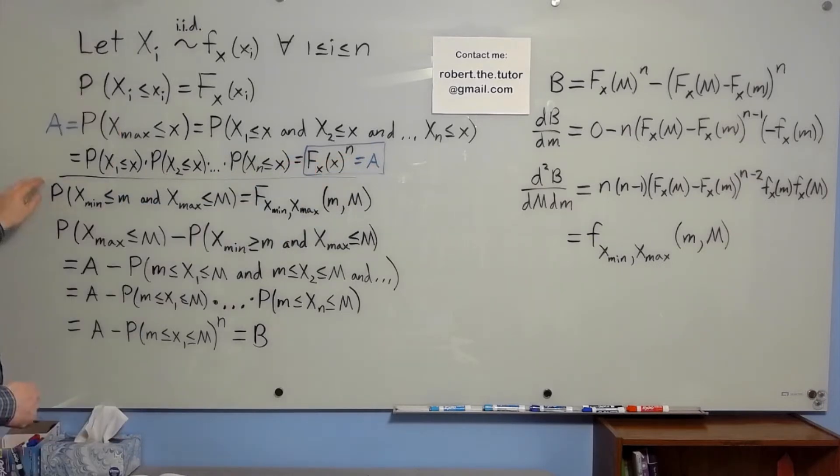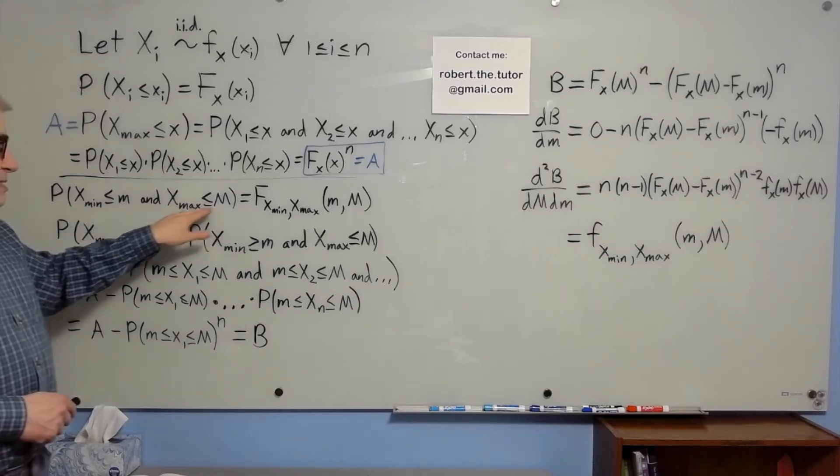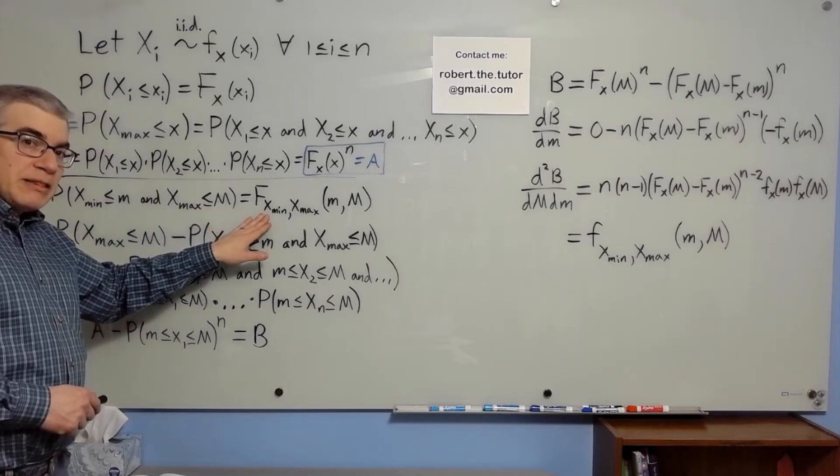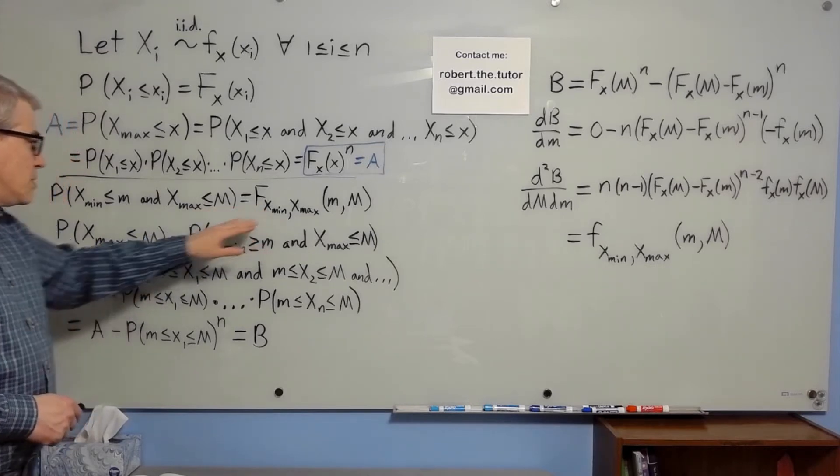Now what we really want is the probability that x min is less than or equal to little m and x max is less than or equal to big M, because that is the joint CDF from which we can get the PDF. I'm going to call this B.